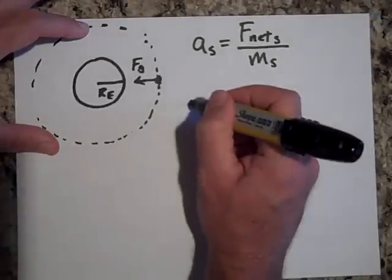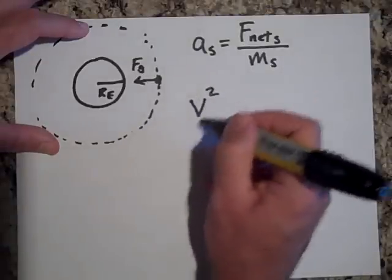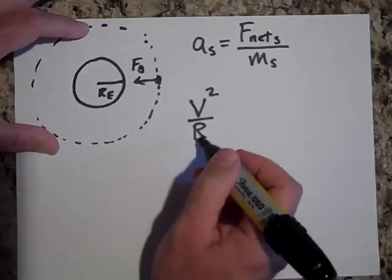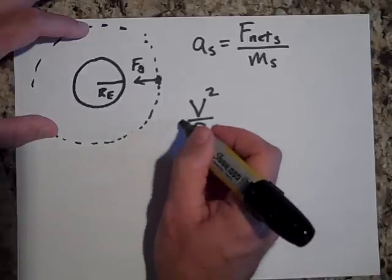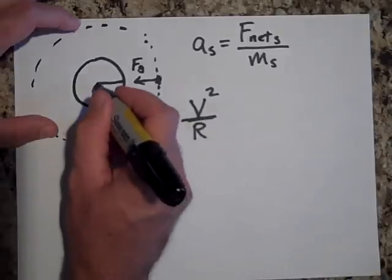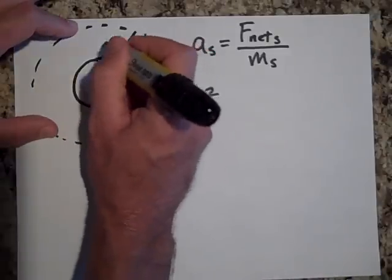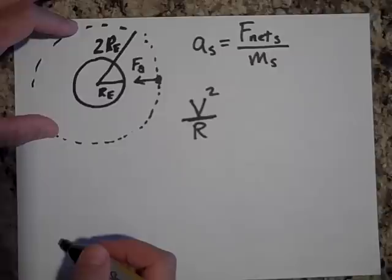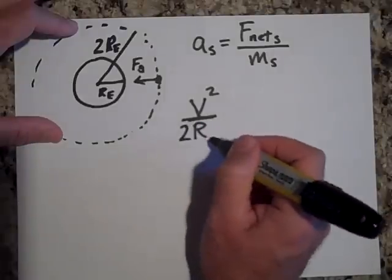So a of the satellite is v squared over R. That's the speed of the satellite squared divided by R. Now, I'm going to make that 2RE, because isn't the radius of this circle 2RE? That's 2RE. So I'm going to say that's 2RE.